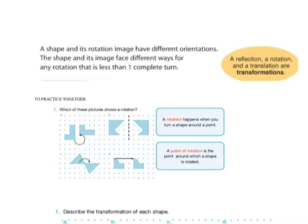When we look at a rotation, the shape and its image have different orientations — they usually face different ways. For it to be a complete rotation, they would face the same way, but at that point, that would probably be more a slide than anything.